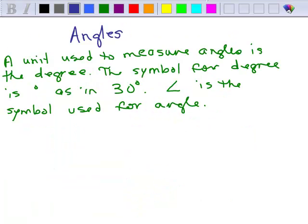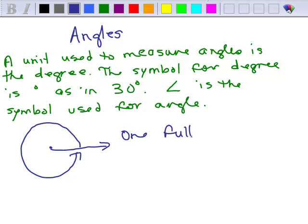We're going to start out with some basics about angles in general. A unit used to measure angles is the degree. The symbol for degree is this little circle here as in 30 degrees. And this symbol here, kind of looks like a less than symbol, is the symbol used for angle. Now, if you have a line right here and I want to do a full revolution, so I'm going to go all the way around here, one full revolution, which can be considered an angle, is actually 360 degrees.